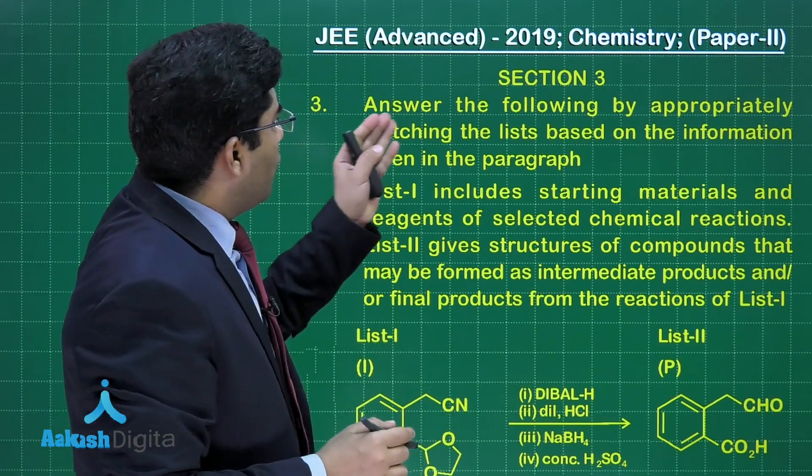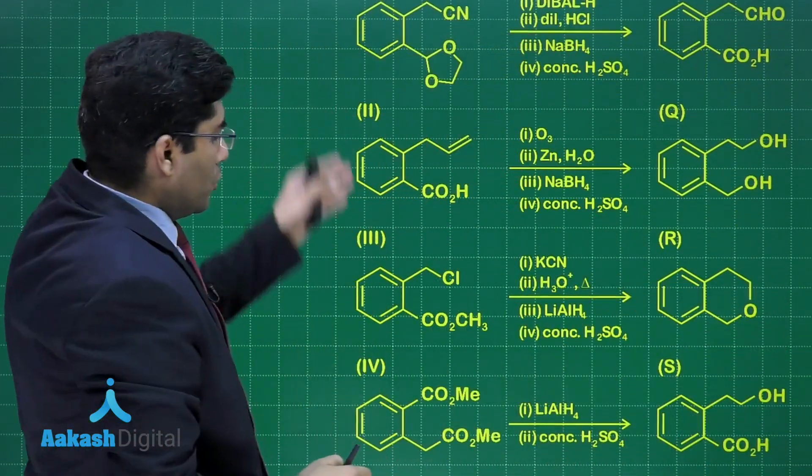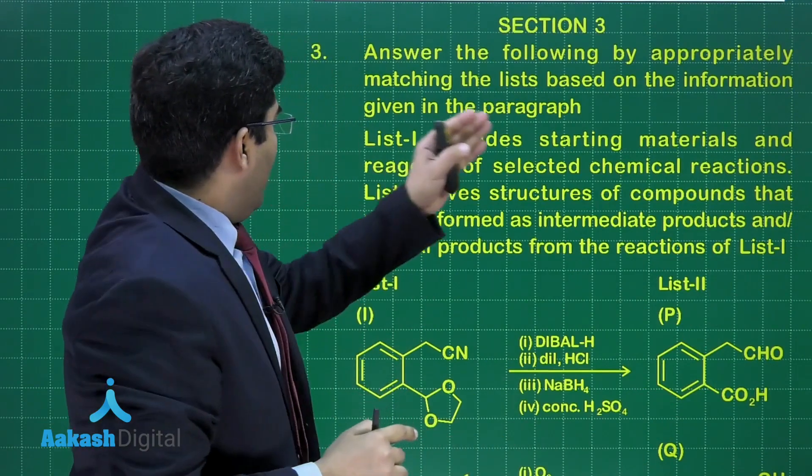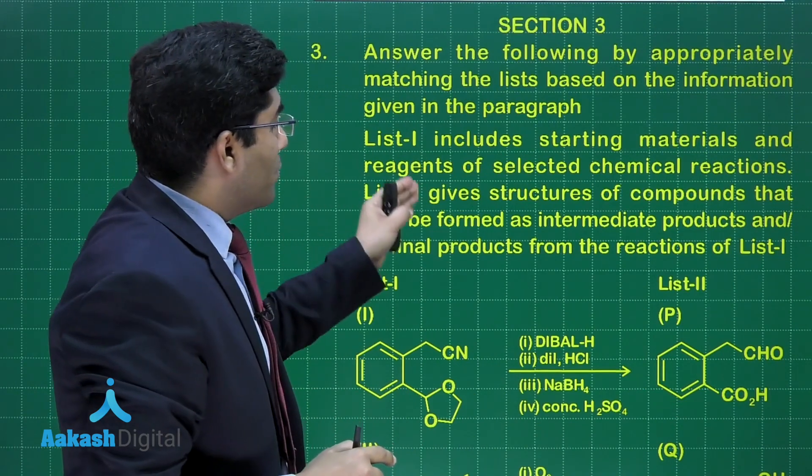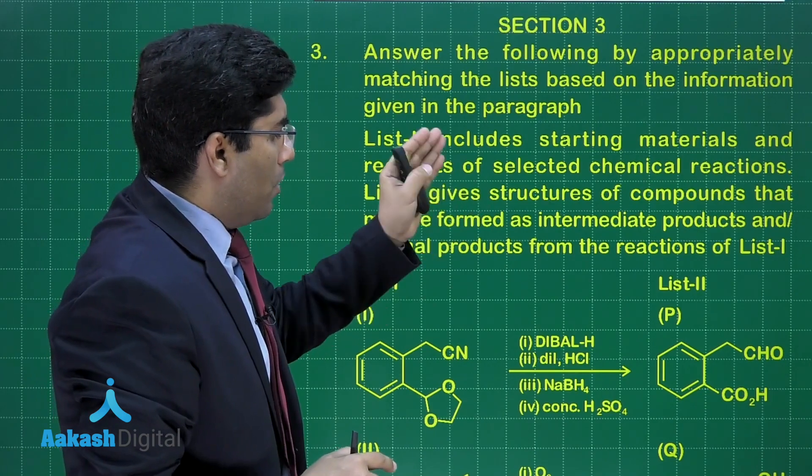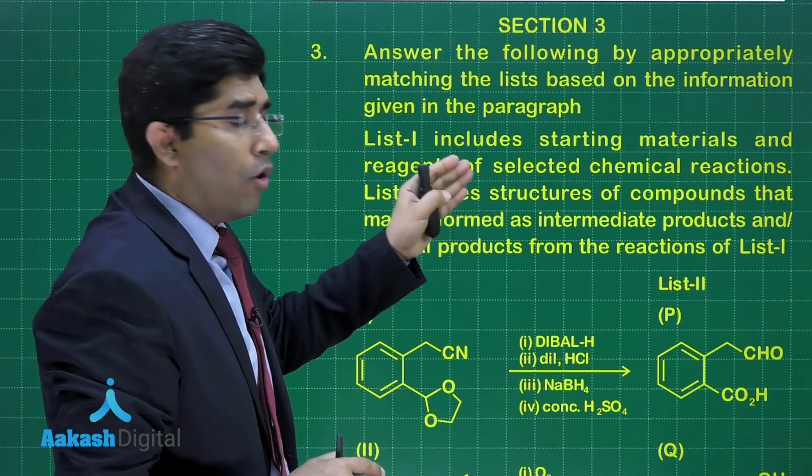In this question, we need to answer by appropriately matching lists based on information given in the paragraph. List-I includes starting materials and reagents of selected chemical reactions. List-II gives structures of compounds that may be formed as intermediate products or final products from the reactions of List-I.